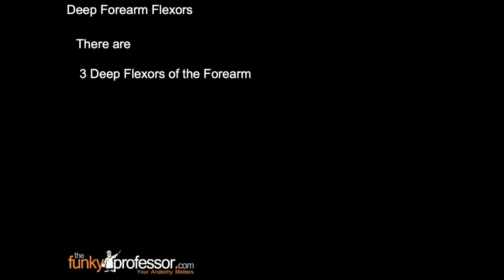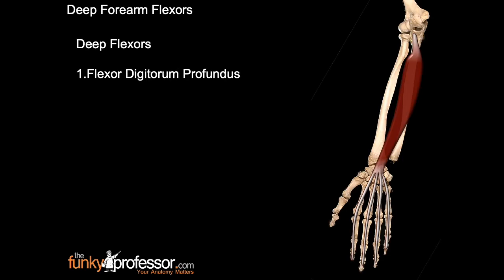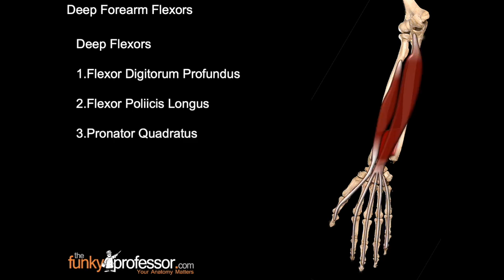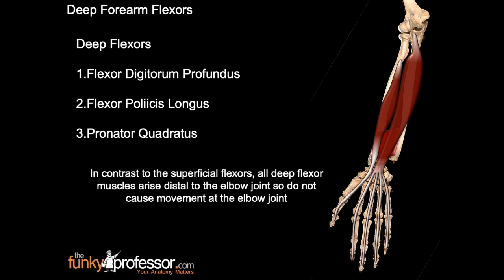There are three deep flexors of the forearm: flexor digitorum profundus, flexor pollicis longus, and pronator quadratus. In contrast to the superficial flexors, all of the deep flexor muscles arise distal to the elbow joint, and therefore they do not cause any movement at the elbow joint.